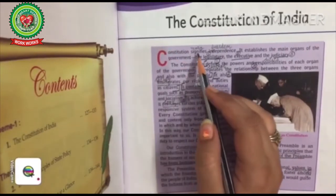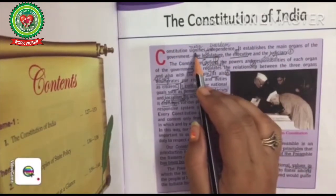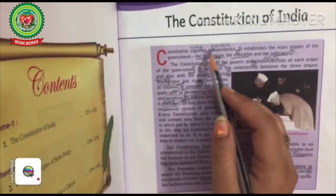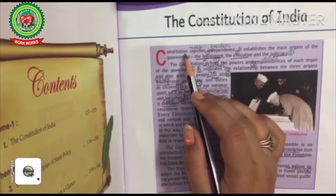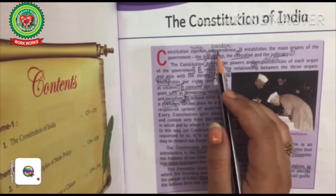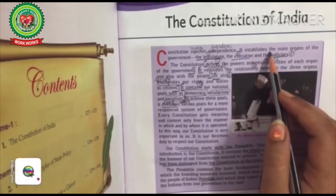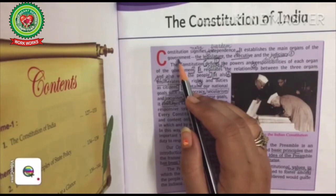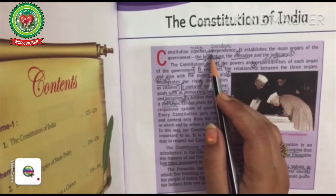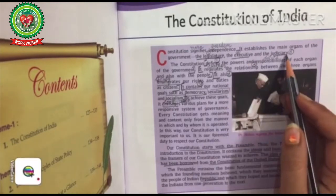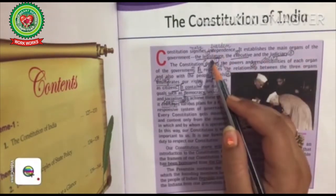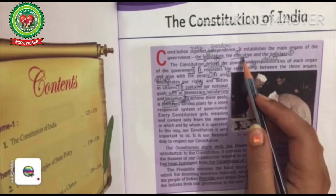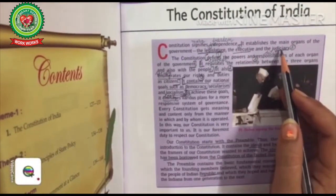The Constitution signifies independence — it means freedom. If a country has a Constitution, it means that country has freedom. It establishes the main organs of the government: Number one, Legislature; Number two, Executive; Number three, Judiciary. The Legislature makes the law, the Executive helps in the implementation of the law, and the Judiciary protects the law.